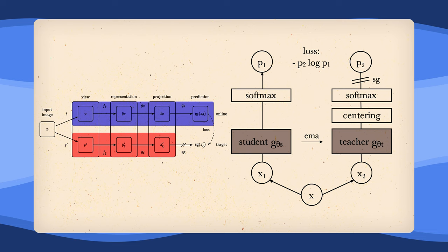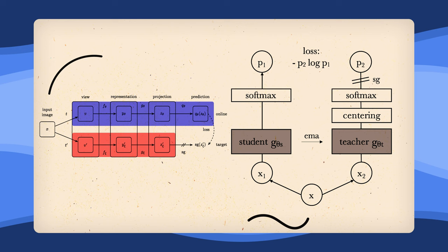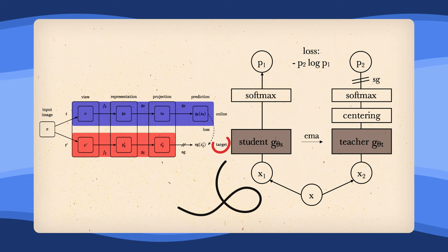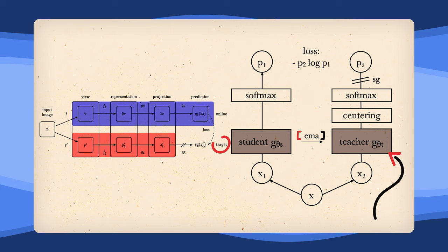We once again have our original source image, apply two different sets of random augmentations, and end up with two different views. We again have our online network, which is now called the student network, and our target, now called the teacher network, which once again is an exponential moving average of the student network.